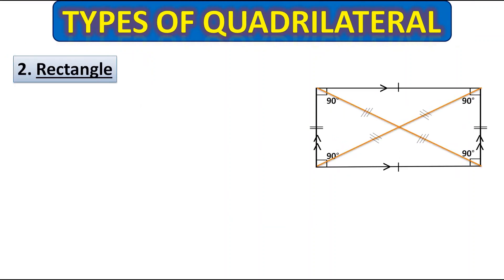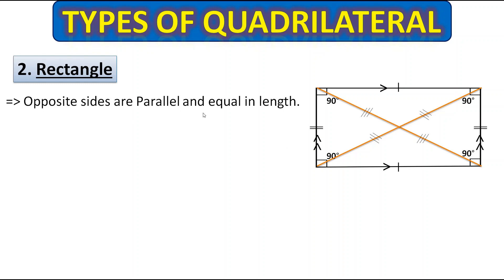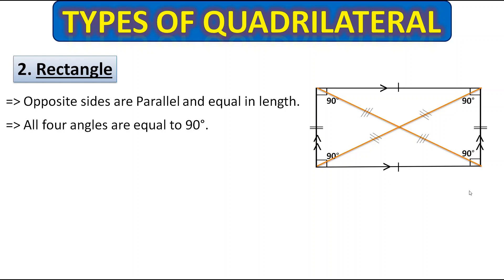Here this is a rectangle. Let's learn the properties of a rectangle. Opposite sides are parallel and equal in length. All four angles are equal to 90 degrees. Diagonals are equal in length — the diagonals of a rectangle are equal. And both diagonals bisect each other, meaning they make half of each other.